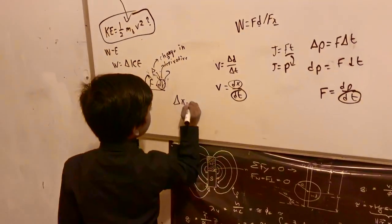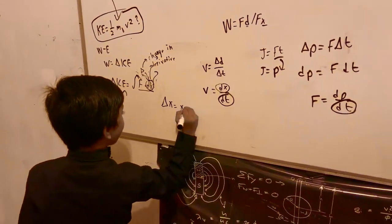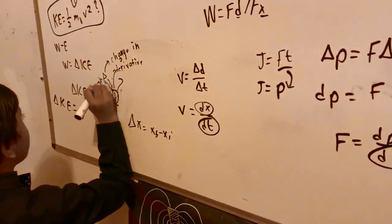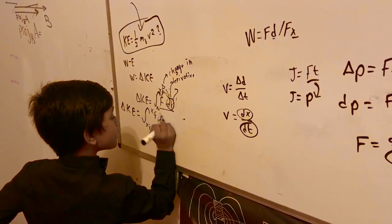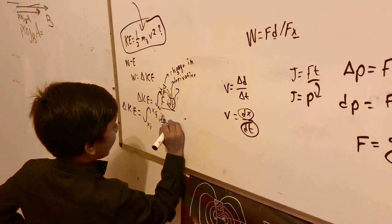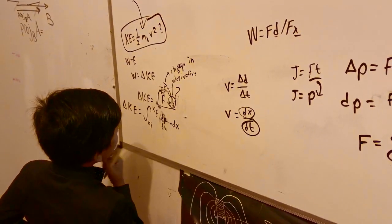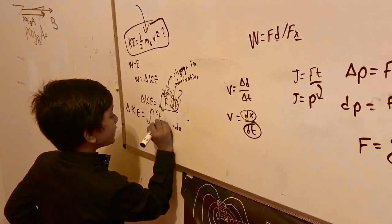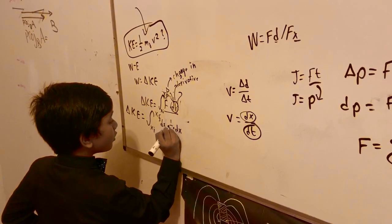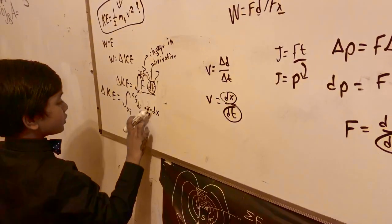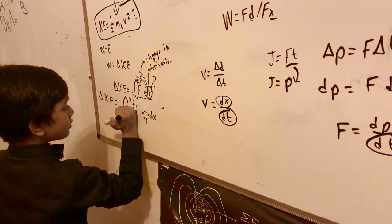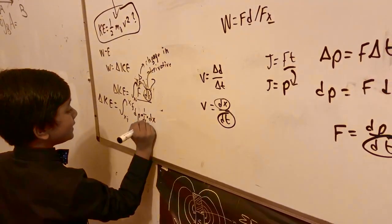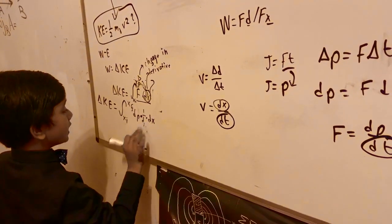So now, which will be equal to xf minus x initial. Obviously, we write it in terms of limits when it comes to calculus, x i to x f times dx. Now, you can see that dp actually breaks up. This is supposed to be equal to dp, this is supposed to be dt, and this is dx.